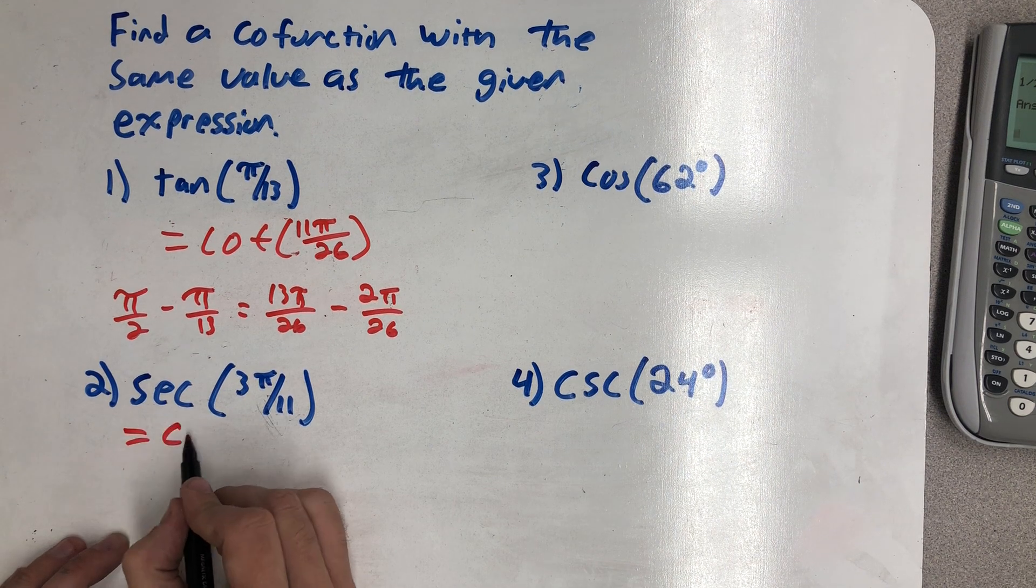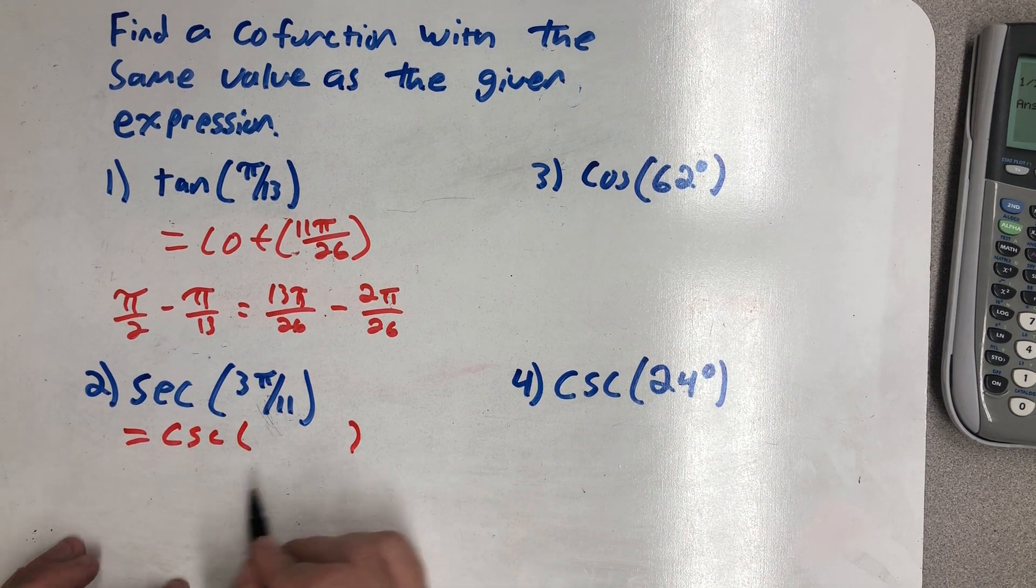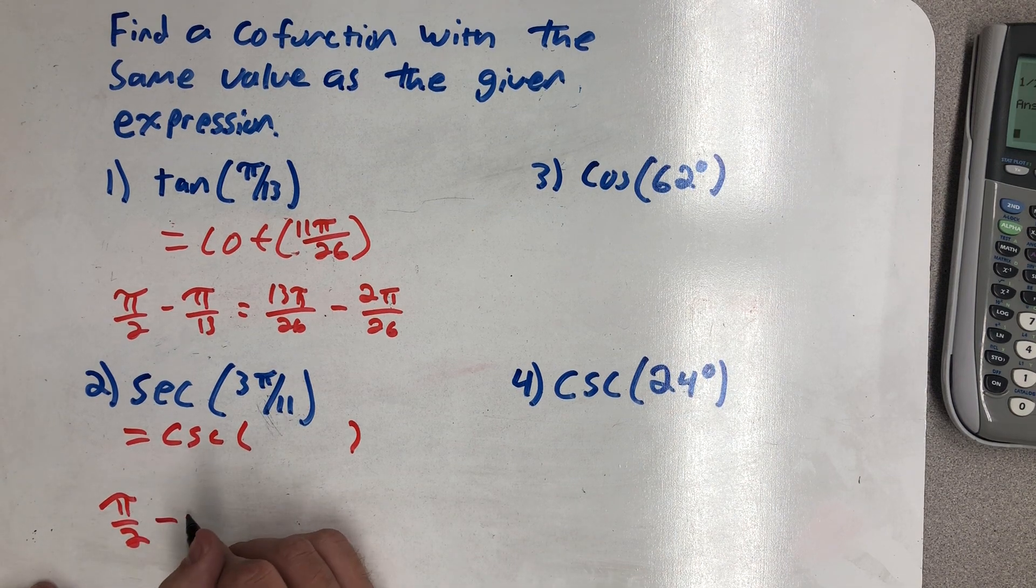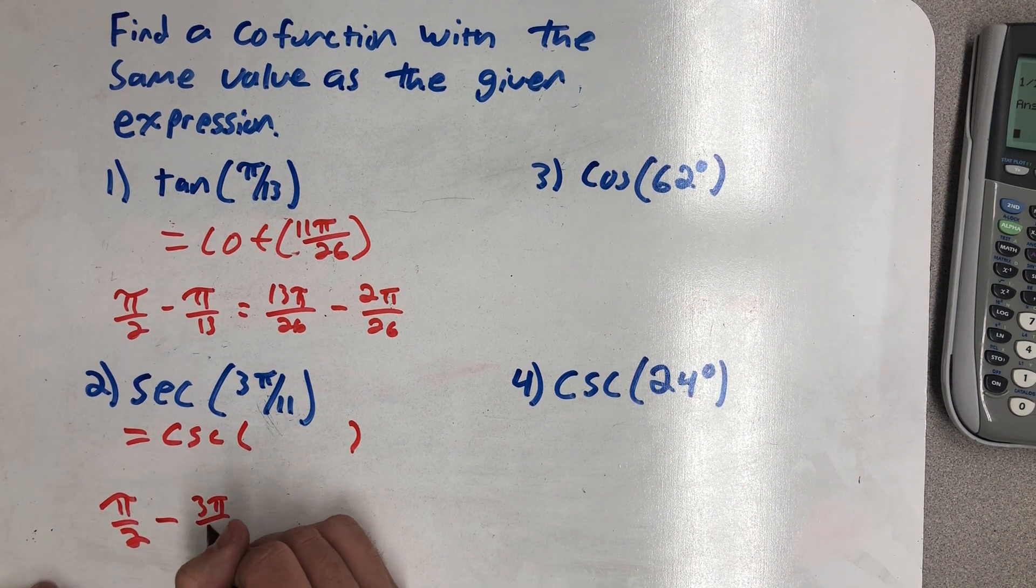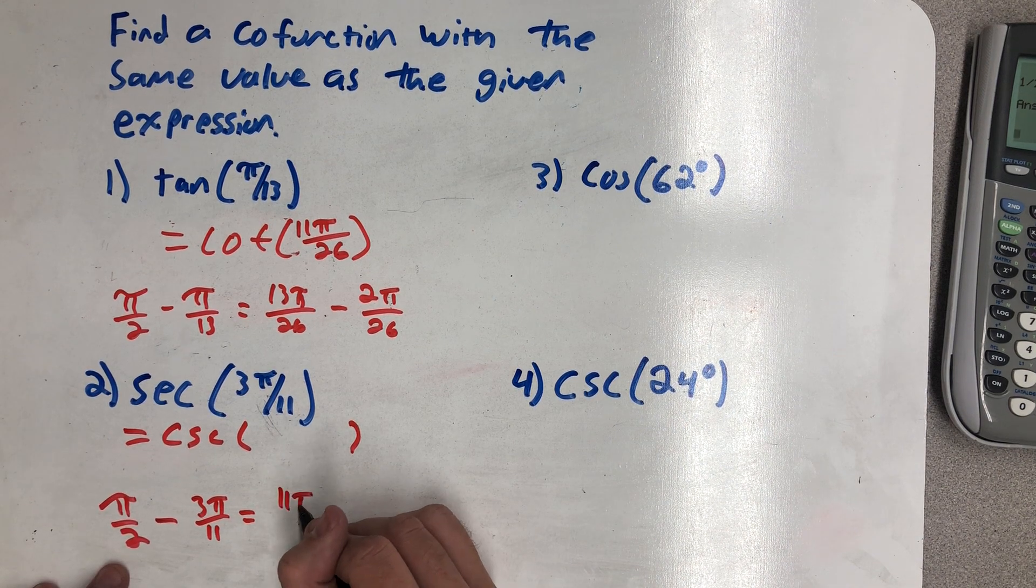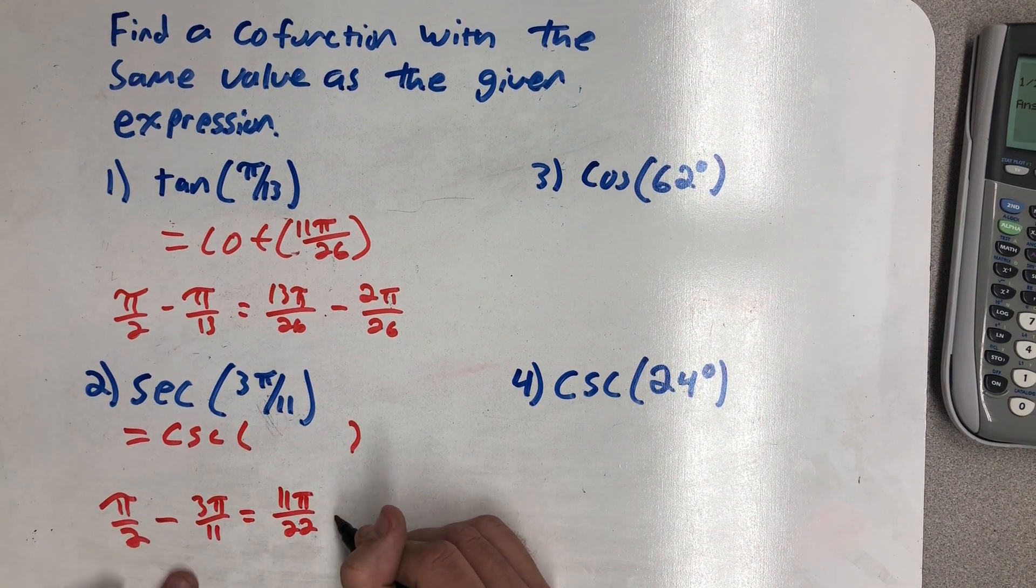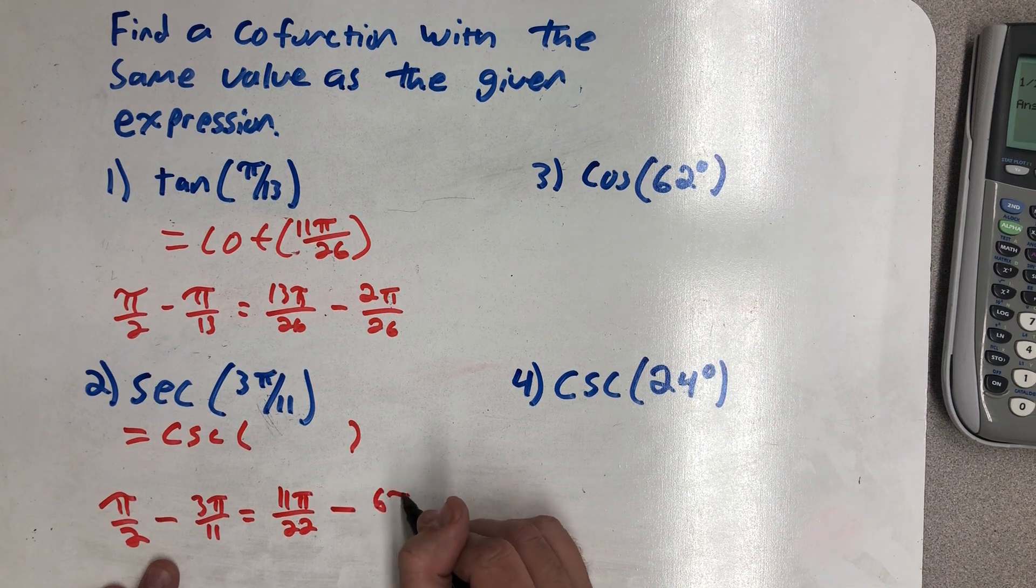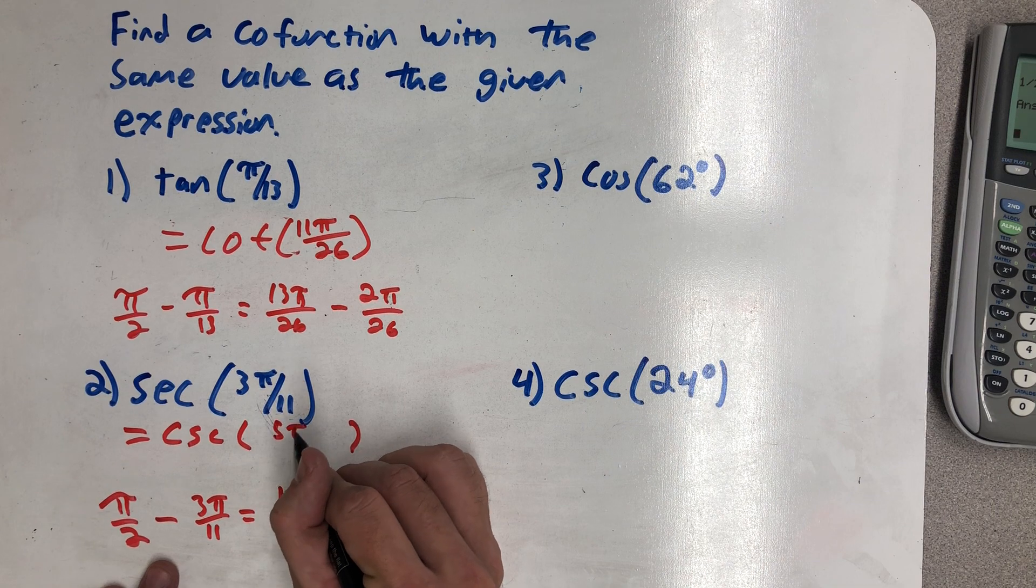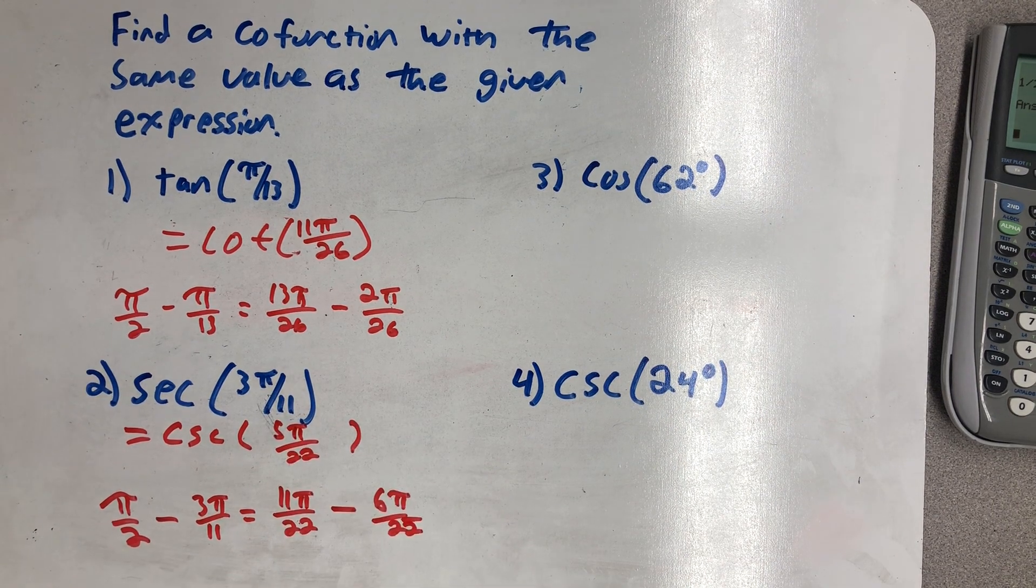For secant, the cofunction is cosecant. I need to go through that same process of finding a complementary angle. π/2 minus 3π/11. And again, let's find a common denominator. So I'd have 11π/22 minus 6π/22. I do my subtraction, and my complementary angle would be 5π/22.